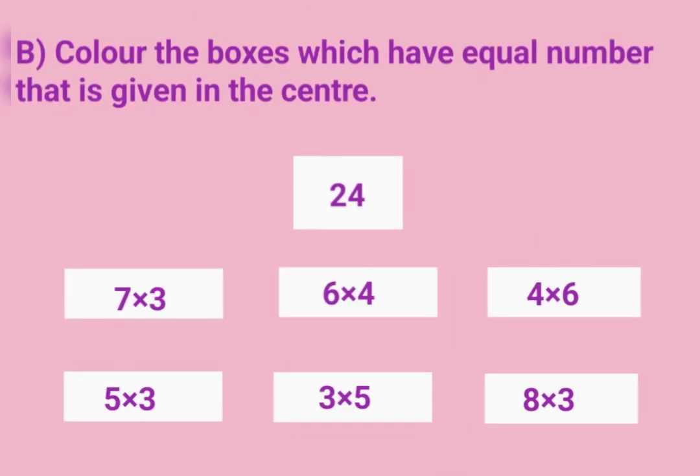Cards Sneha has: 15, 36, 40, 8, 25. Part B: Color the boxes which have a number equal to the number given in the center — 24. Options include: 7×3, 6×4, 4×6, 5×3, 3×5, 8×3.